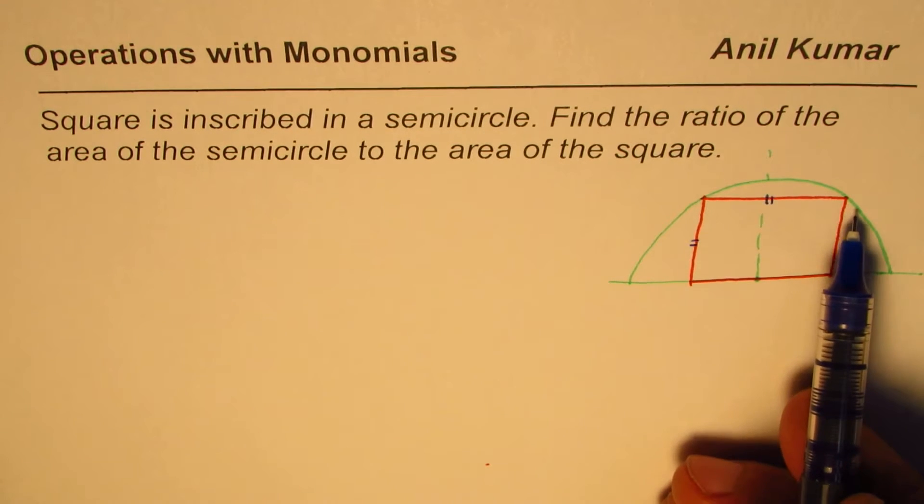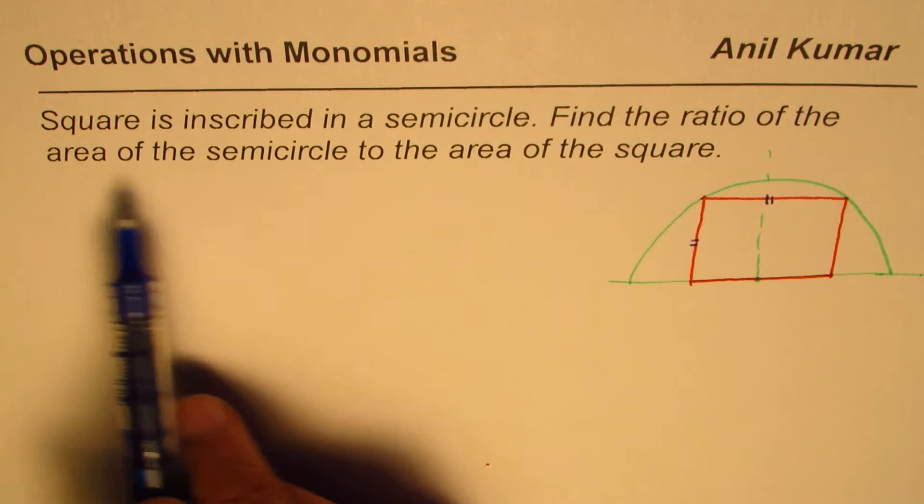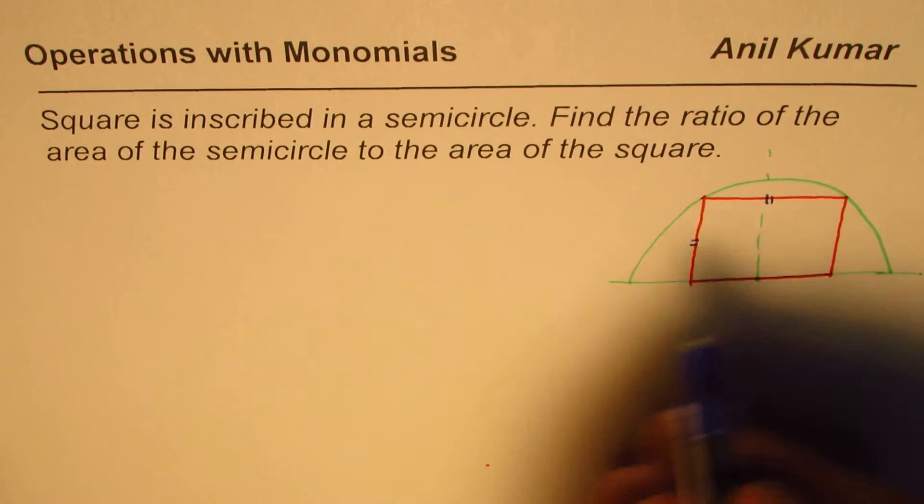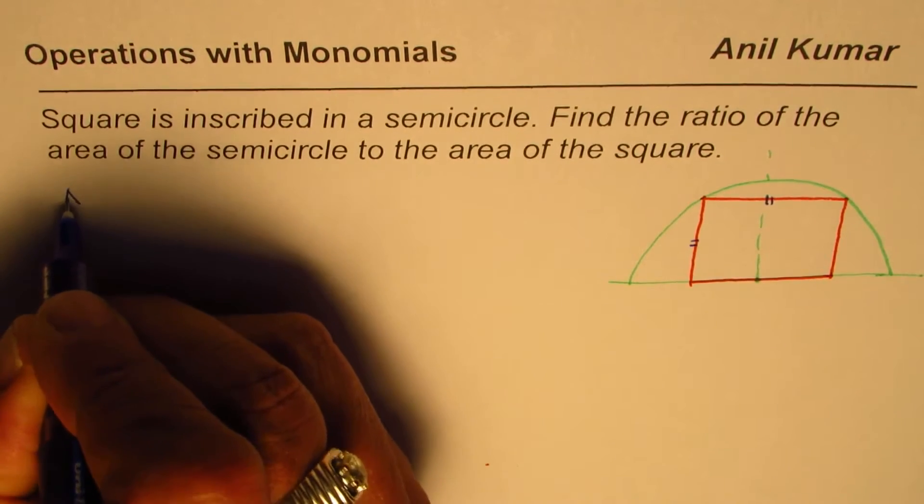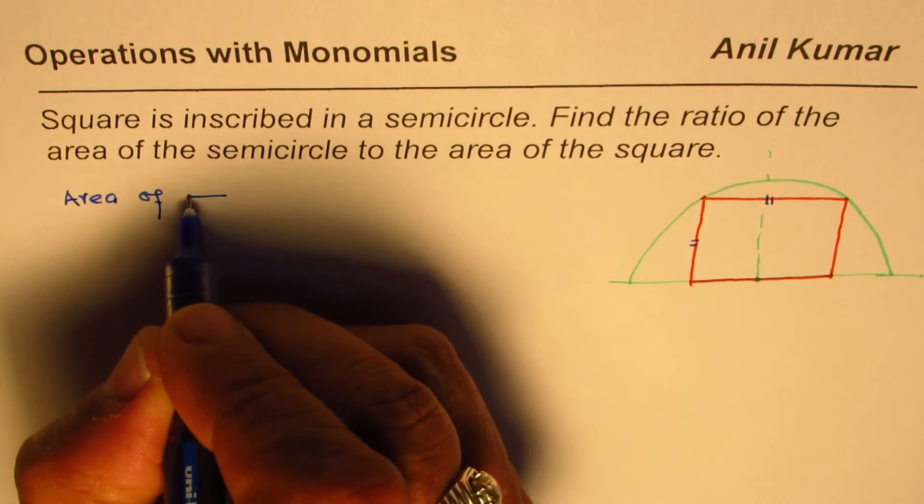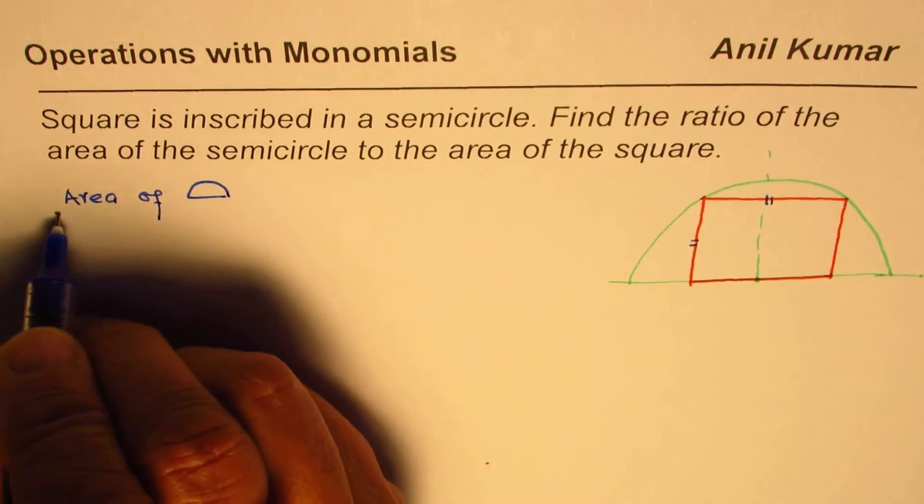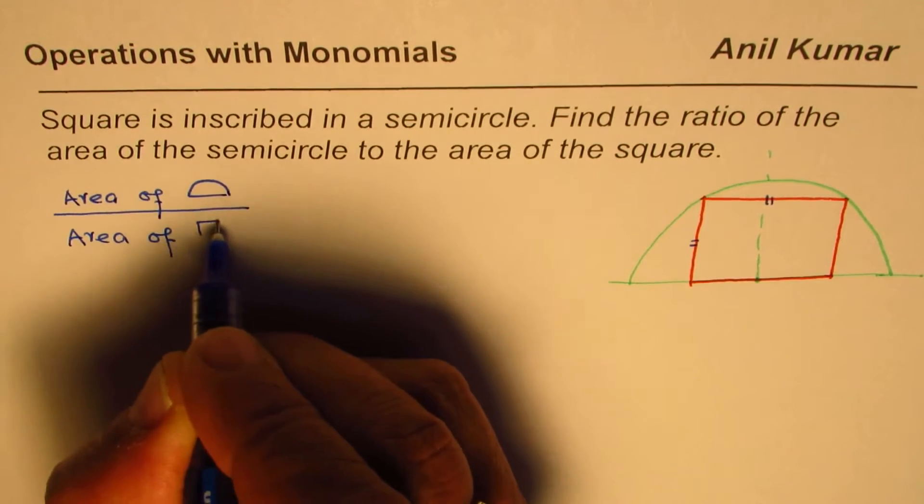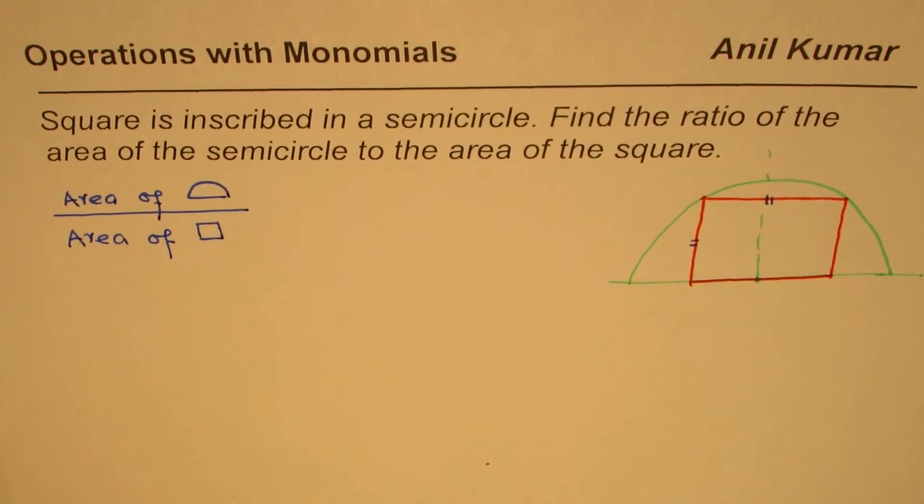Find the ratio of the area of the semicircle to the area of the square. So what you need to find is the ratio of area of semicircle over area of square. So this is what you need to find.